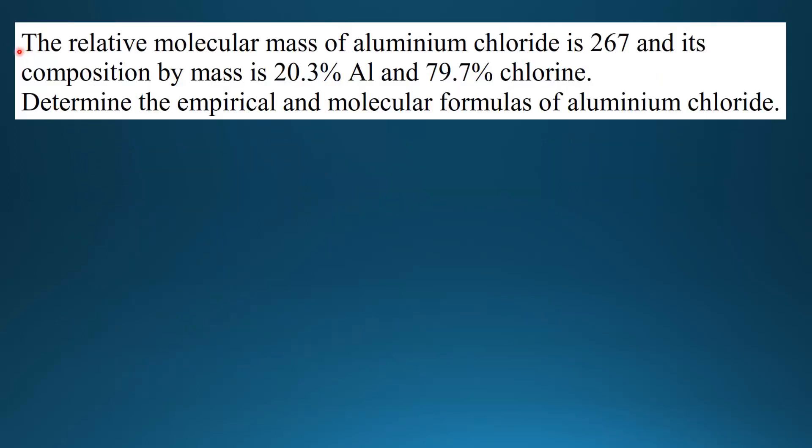We'll calculate the empirical formula and molecular formula of a compound. The relative molecular mass of aluminium chloride is 267 and its composition by mass is 20.3% aluminium and 79.7% chlorine. Determine the empirical and molecular formulas of aluminium chloride.